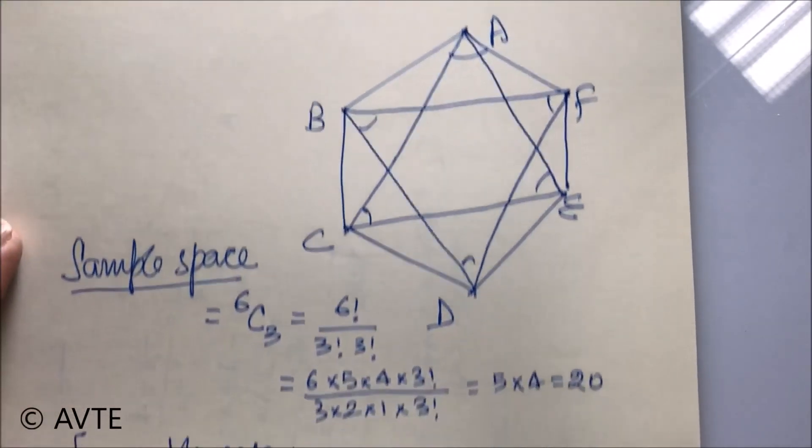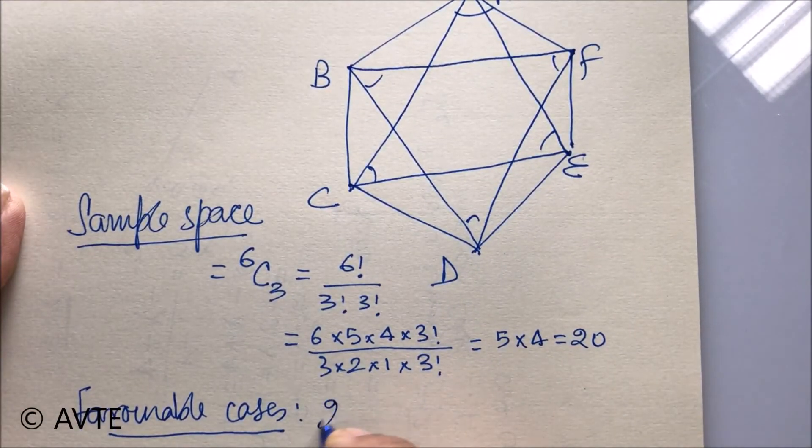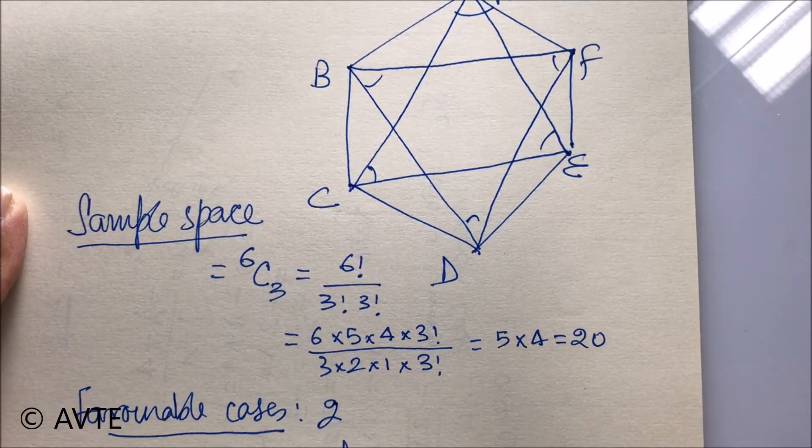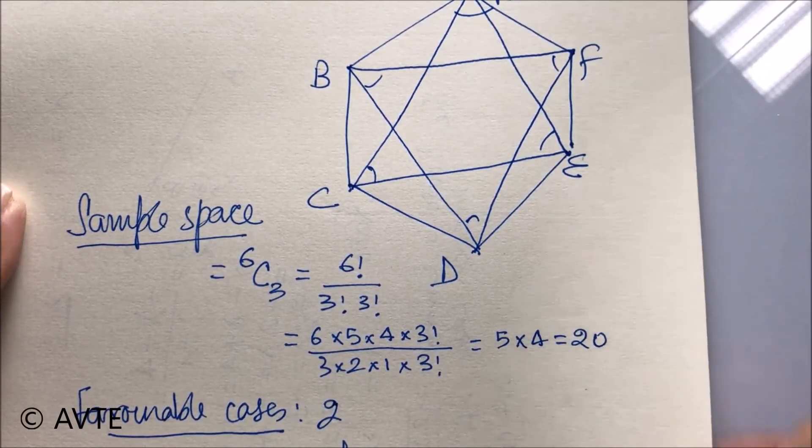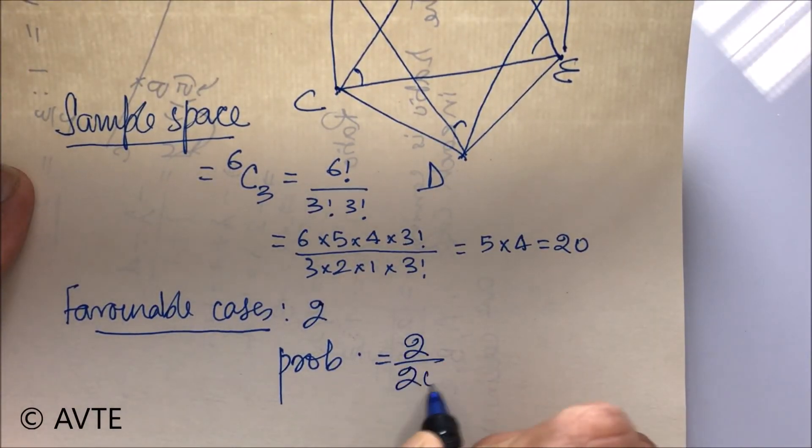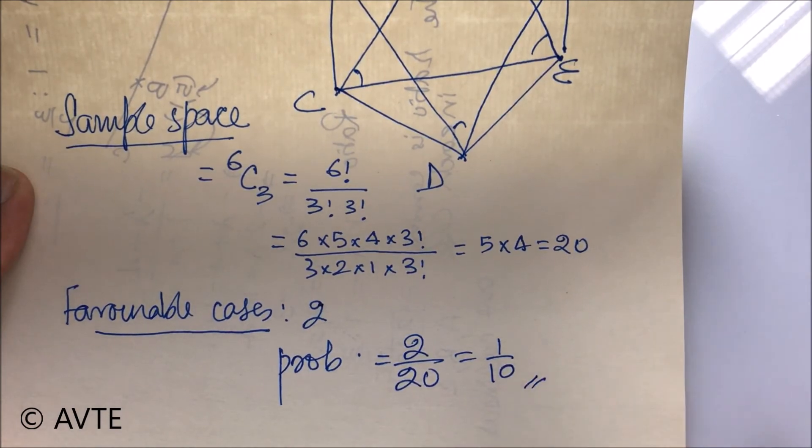Therefore, number of favorable cases are 2 and hence the probability is number of favorable cases divided by the sample space. Therefore, the probability is 2 upon 20, that is 1 by 10. Thank you very much.